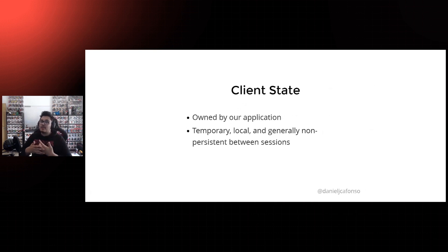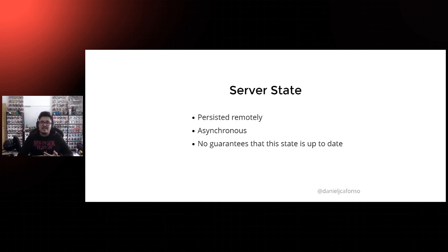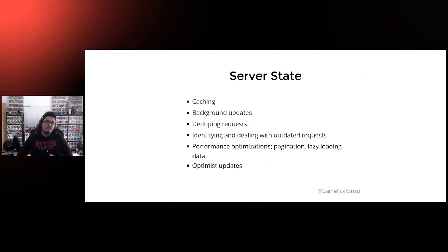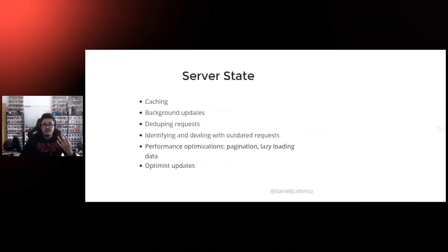Then you have the server state — state that is persisted remotely, usually in a database. This state is asynchronous, meaning you have to access it with asynchronous APIs, and there's no guarantee it's up to date. With server state also comes a bunch of other challenges like caching, background updates, deduping requests, identifying and dealing with outdated requests, and other performance optimizations like optimistic updates. Since our state was pretty much comprised of server state at that point, we decided we needed a new tool — and what we started using was React Query.